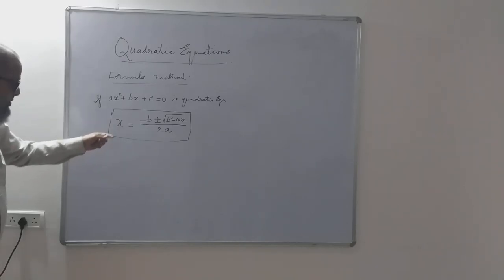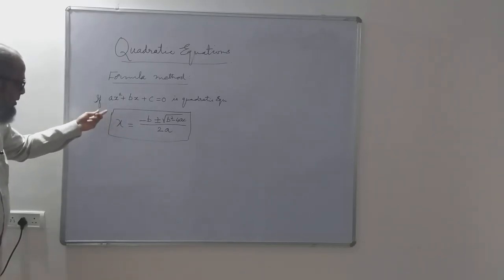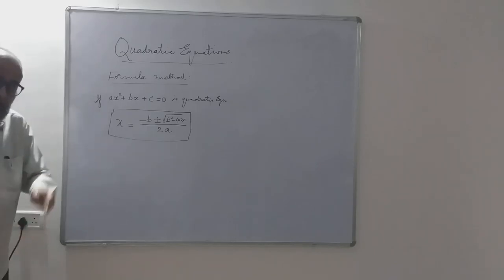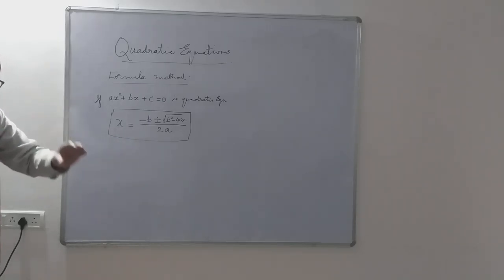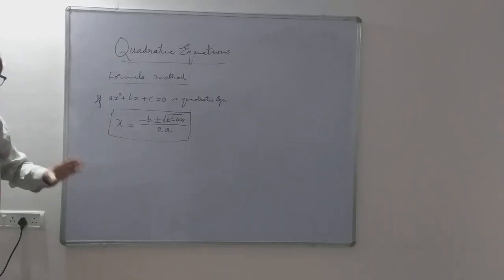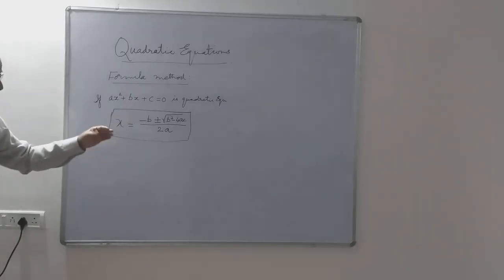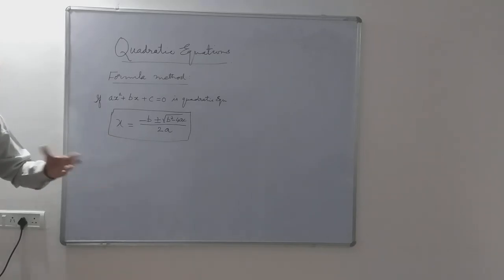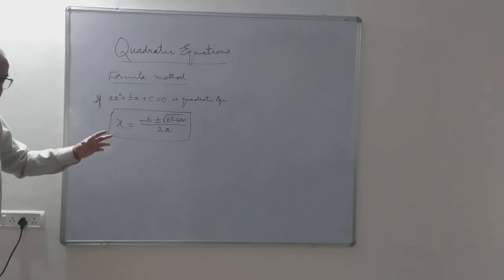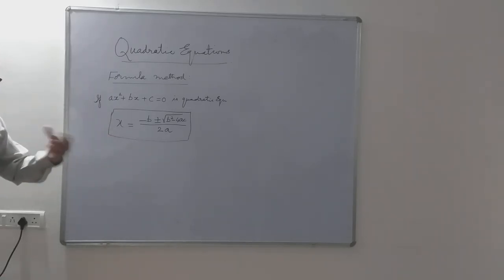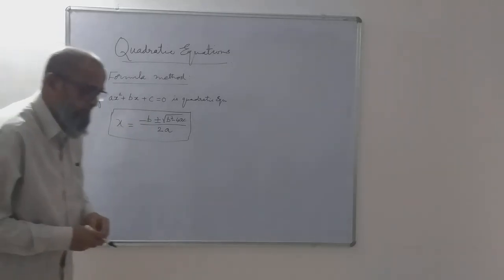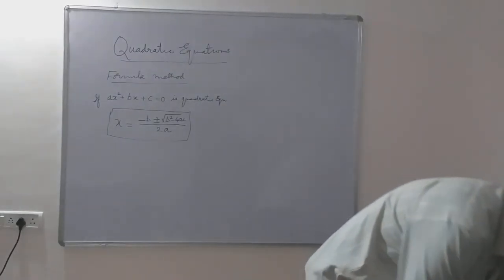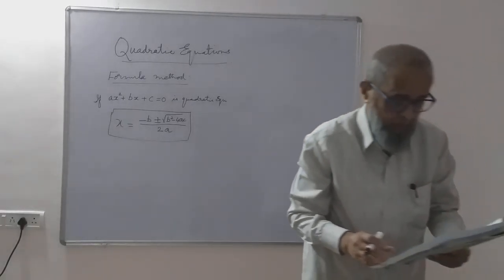This formula can be used to find the roots of a quadratic equation. In the examination, if they say to do it by a specific method, you are supposed to do it by that method only. If the question doesn't specify, then we can do it by any method. As long as the method is correct, we get the same answer. We don't get different answers from different methods — we get the same answer provided we do it correctly. So you are supposed to remember this formula, apply it, and get the roots. Now let us take up some problems on this.